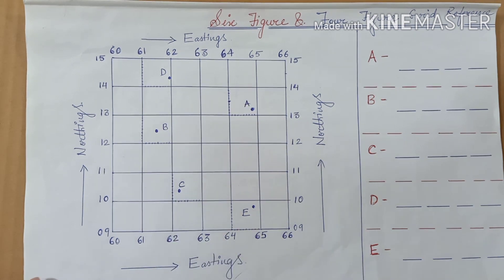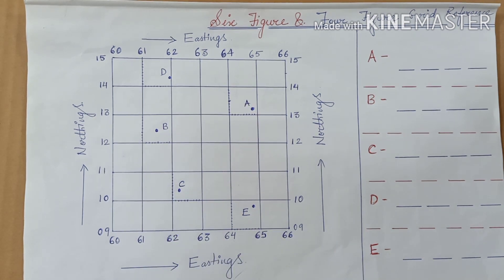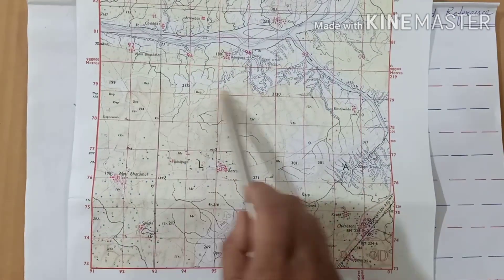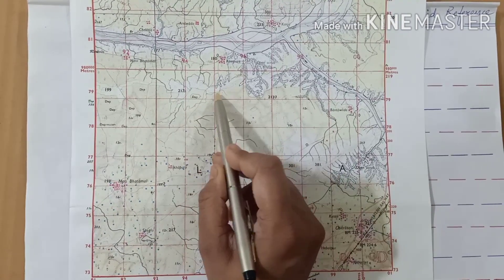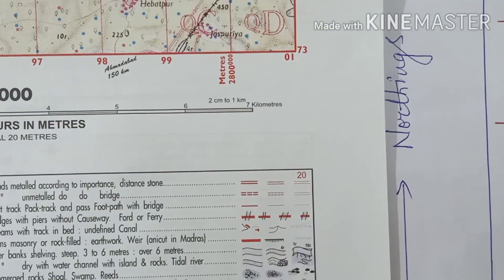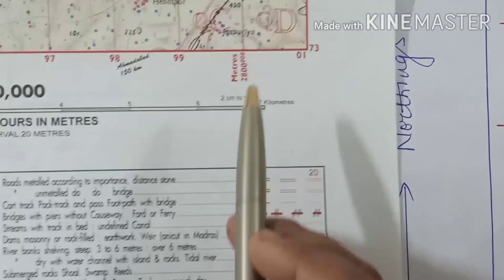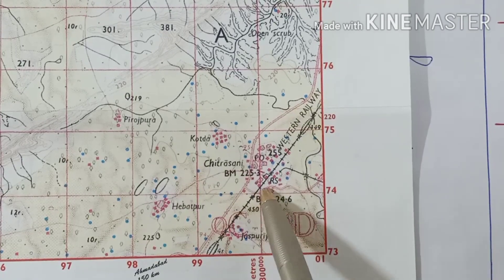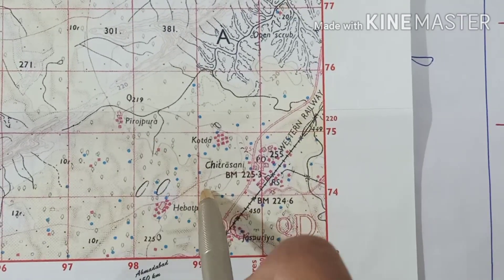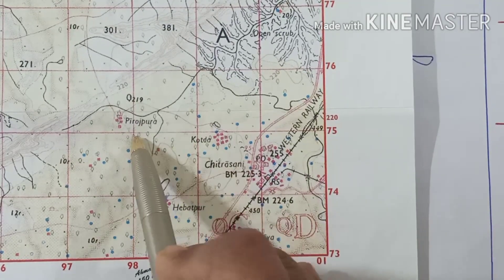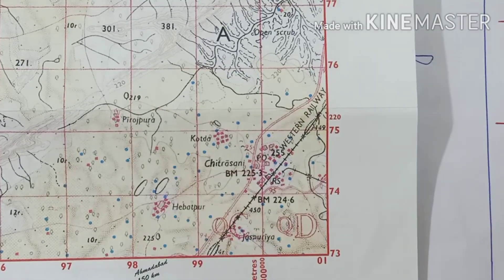I have made certain grids which will help you to understand how to locate a place on a topographical map. If we see this map, you will find red lines that crisscross each other. They form a grid system. Each square is a grid and the scale of the map is 2 centimeters to 1 kilometer. So each square in the topographical sheet is 2 centimeter by 2 centimeter on the map and 1 kilometer by 1 kilometer on the ground. The area of each grid is 1 square kilometer on the ground.